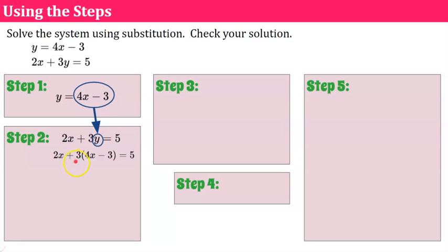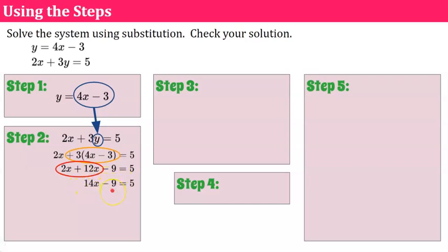We distribute first, keeping 2x. 3 times 4x is 12x, and 3 times negative 3 is negative 9, so we have 2x plus 12x minus 9 equals 5. Combine like terms: 2x and 12x are 14x. To get 14x alone, add 9 to each side: 14x equals 14. Divide both sides by 14, and x equals 1.